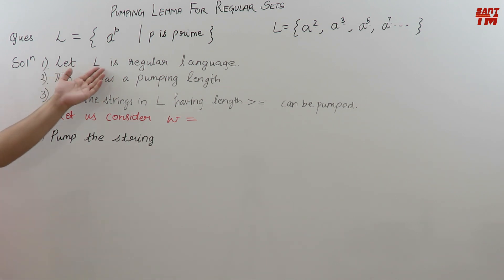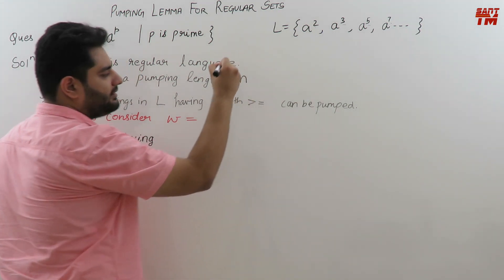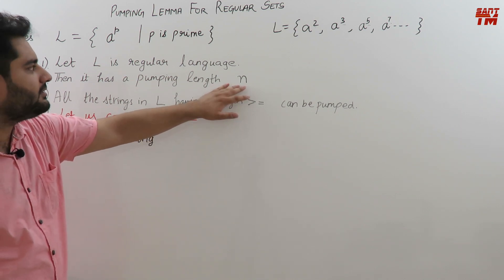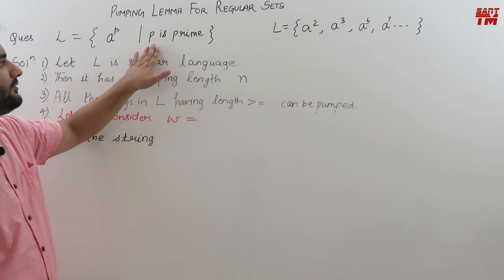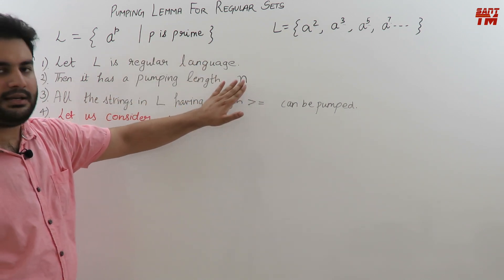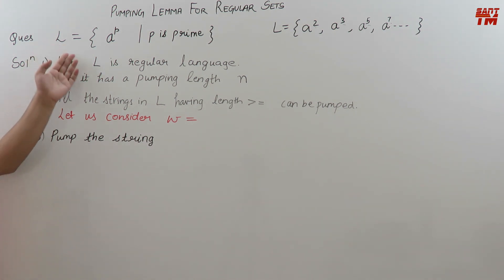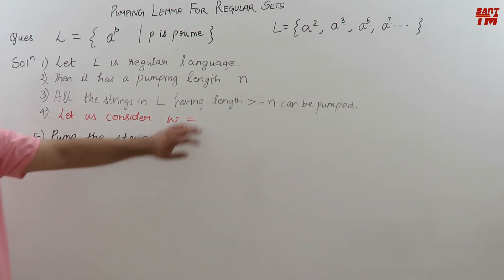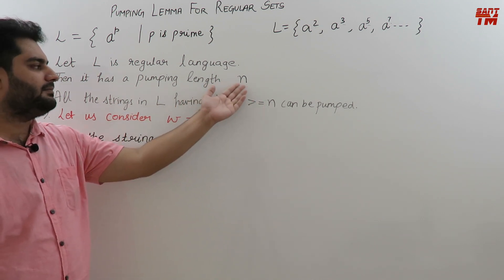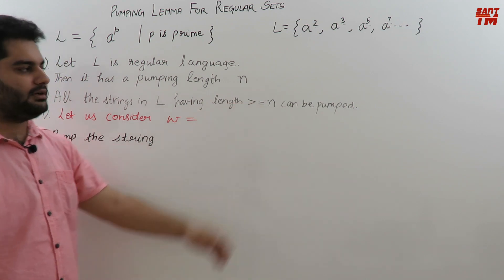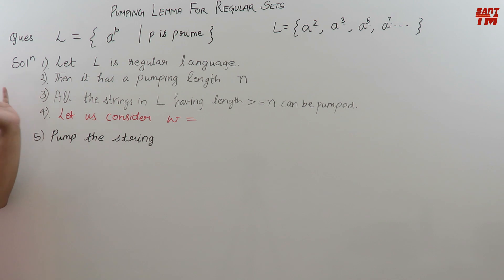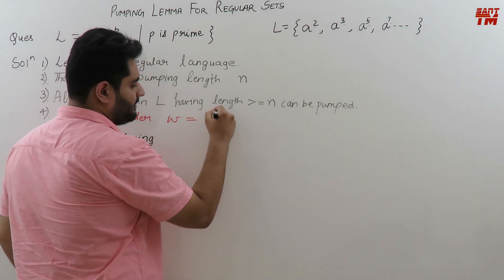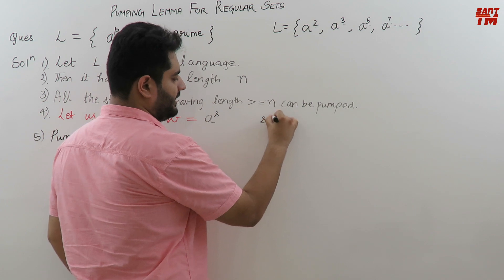Let L be a regular language. Then if it is regular, it will have a pumping length. We call this pumping length N this time — because P is already used in the question and we don't want confusion. All strings in language L with length greater than or equal to N can be pumped. Now, following point 3, we consider one string W = a raised to the power S, where S is a prime number and S is greater than N.